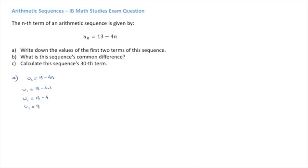For the value of the second term of the sequence, u2, we replace n by 2 and calculate it. So that would be u2 = 13 - 4(2), leading us to u2 = 13 - 8, which finally gives us u2 = 5.